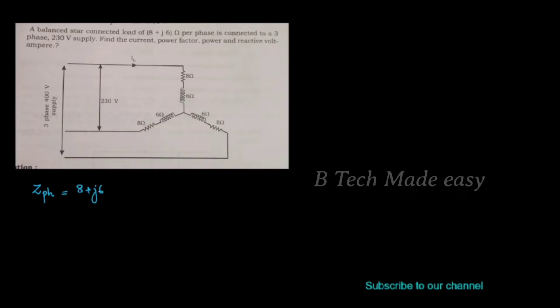Impedance per phase Zph is equal to 8 plus j6 ohm. Line voltage VL is equal to 230 volt.